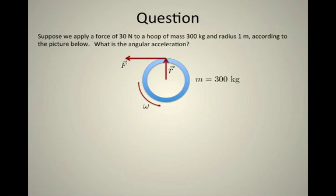Now we're going to get some experience applying Newton's second law of rotations to an actual situation and try to calculate what will be the angular acceleration that results from us applying a force. Let's imagine that we have a giant hoop that weighs about 300 kilograms and has a radius of about 1 meter. This is about the size of a merry-go-round.